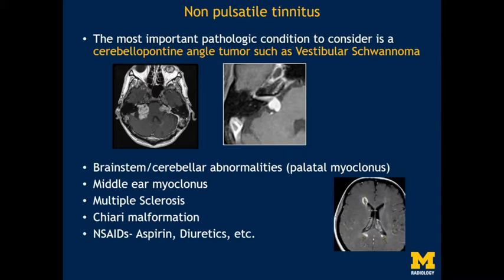The reason is that the most important pathological condition we are trying to discover is a cerebellopontine angle tumor like a vestibular schwannoma. There are other causes of non-pulsatile tinnitus that might be evident on MRI, such as abnormalities in the brainstem, cerebellum, brain parenchyma, or the craniocervical junction like MS or Chiari malformation. But these are usually diagnoses of exclusion if we are unable to find another cause.